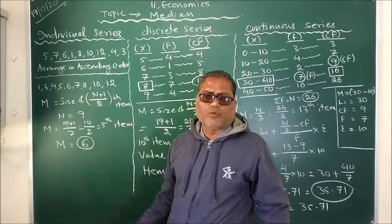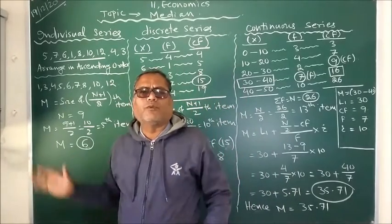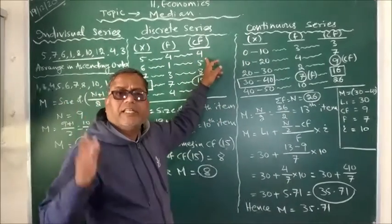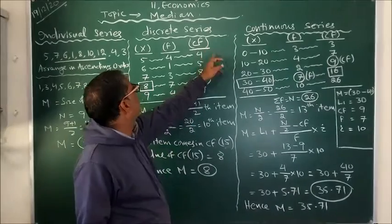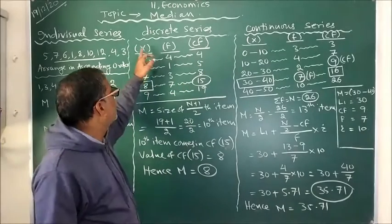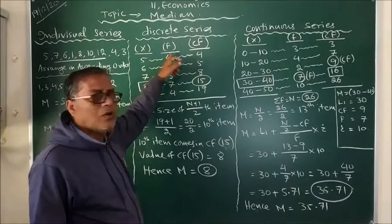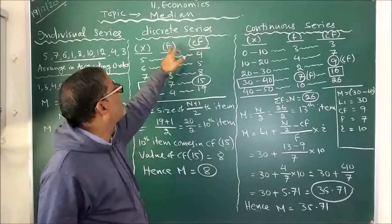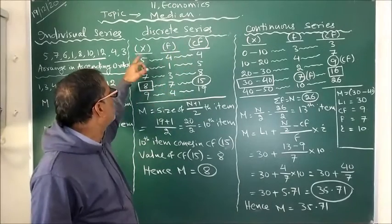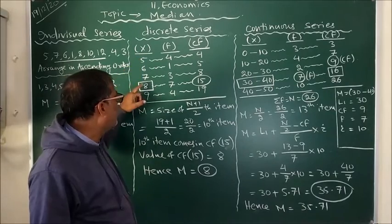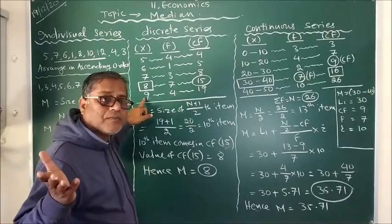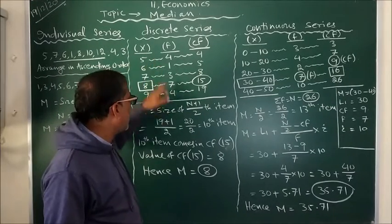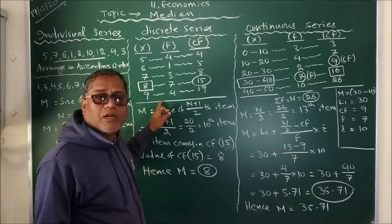So in this way, in individual series it is quite easy to calculate median. Now for discrete series, it is also not difficult. It is grouped data, so along with the values we have the number of occurrences of each value, which is called frequency. You can see here the values are 5, 6, 7, 8, 9. But what is N, the number of observations? It is not just 5, because N is nothing but the summation of frequency.